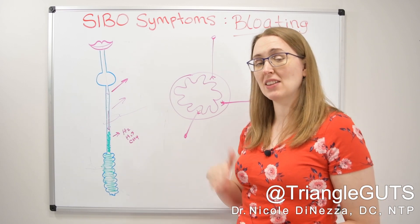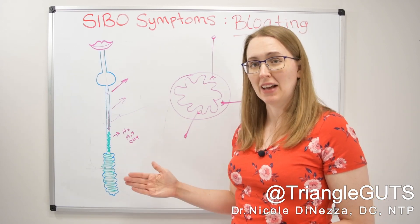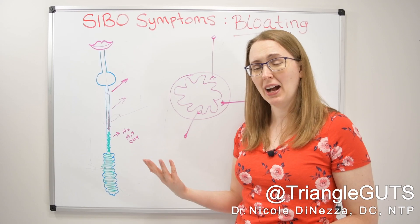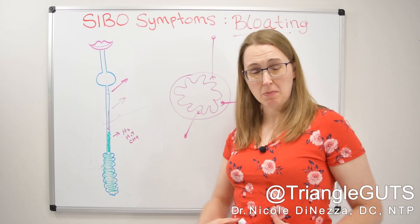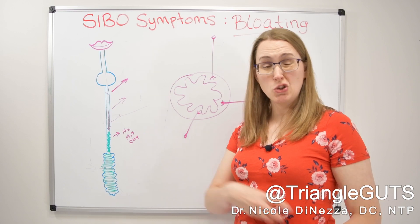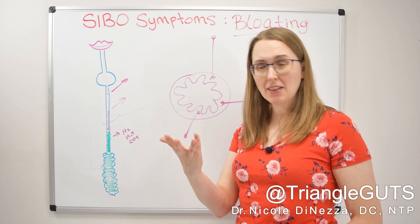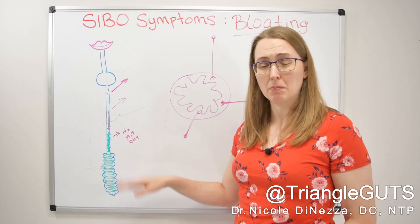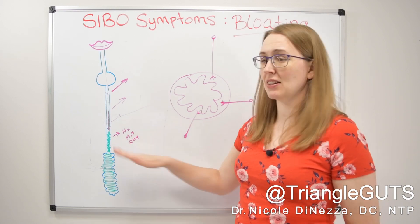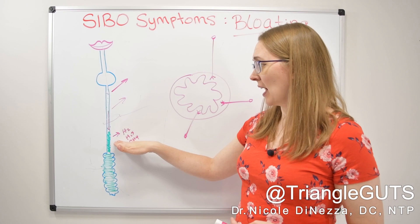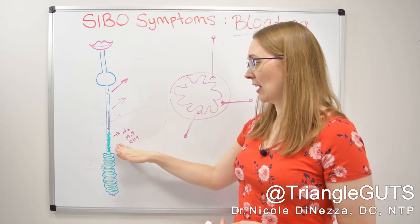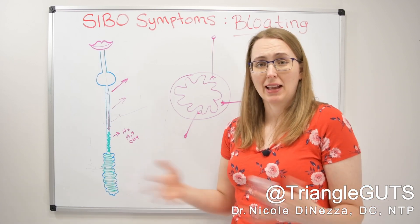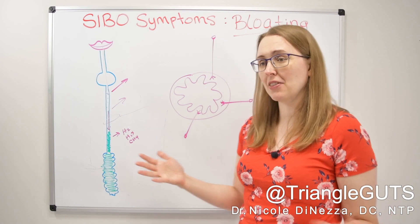Those gases actually have to make their way into the bloodstream and then you exhale them in your breath — that's why SIBO breath tests work. But you can imagine how long it takes for gas to travel from your small intestine to your bloodstream, to your lungs, and then out via your breath. That's why the bloating gets really severe in SIBO: the gas literally has nowhere else to go. It's not close enough to the mouth to be released as a burp and not close enough to the anus to be released as a fart — it really just has the route of the bloodstream and getting exhaled via your breath in order to dissipate.